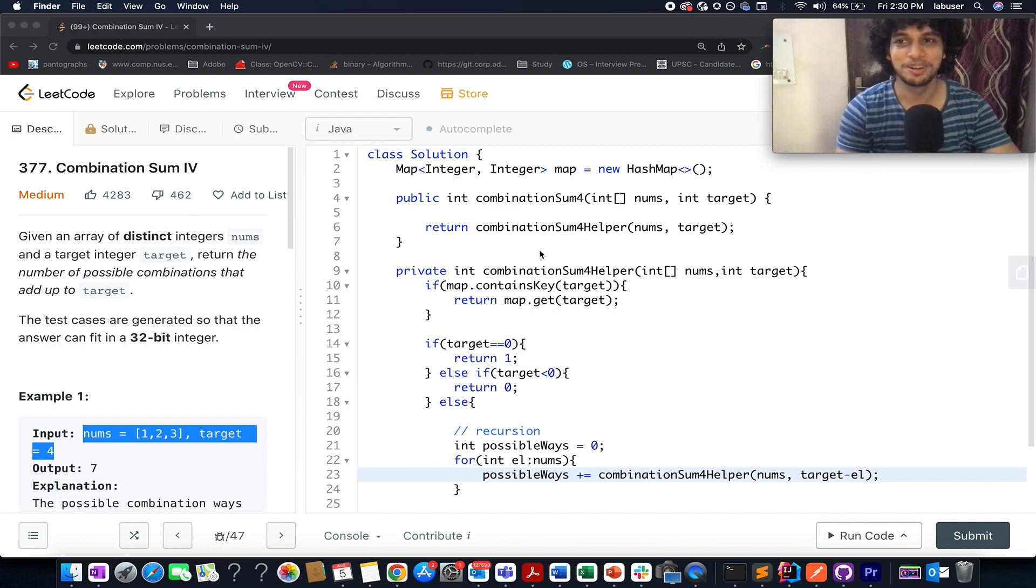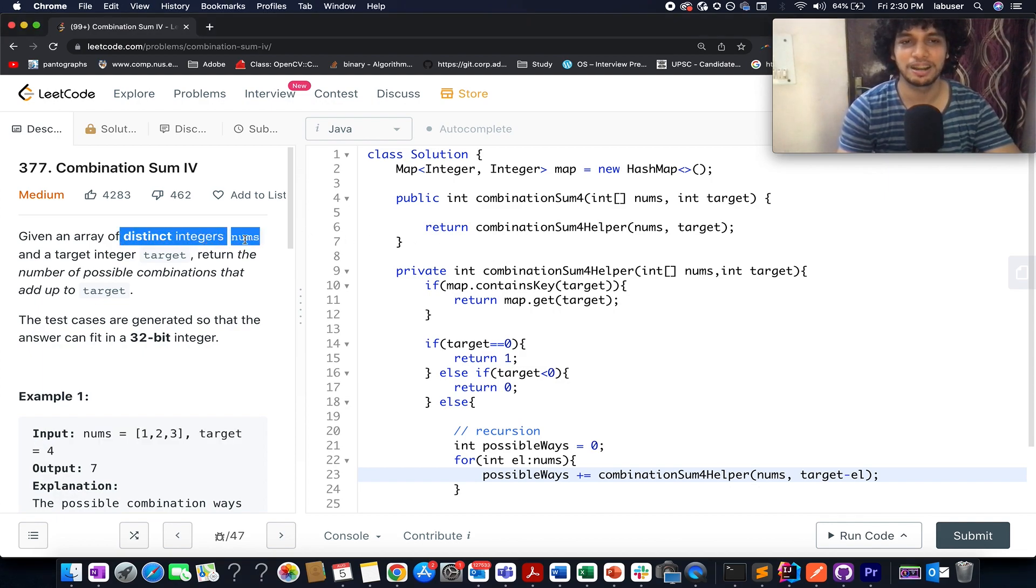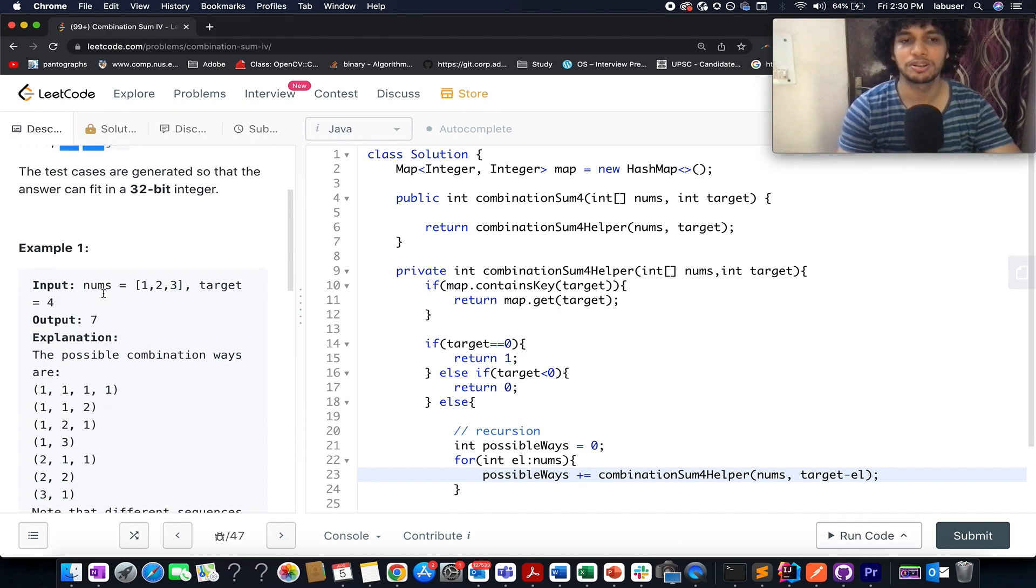To all those who are new, let's understand the question. The problem says we are given distinct numbers in the form of an array and a target integer value. What we need to identify is the number of possible combinations that add up to the target and you're also told you can use the same number multiple times. It's not like the same number can be used only once, it can be utilized multiple times.